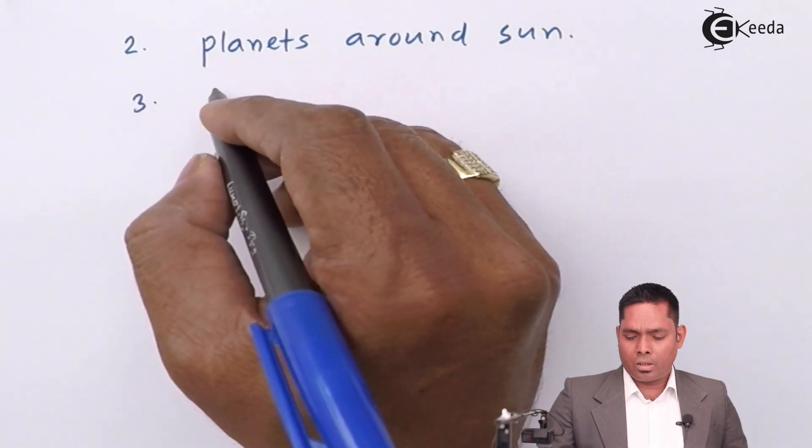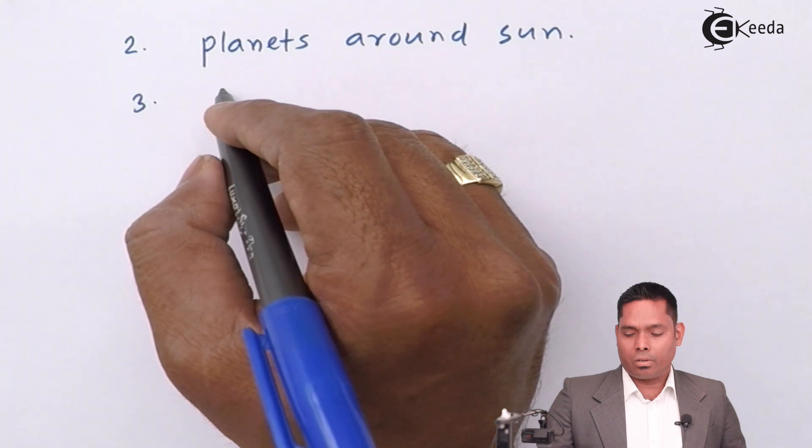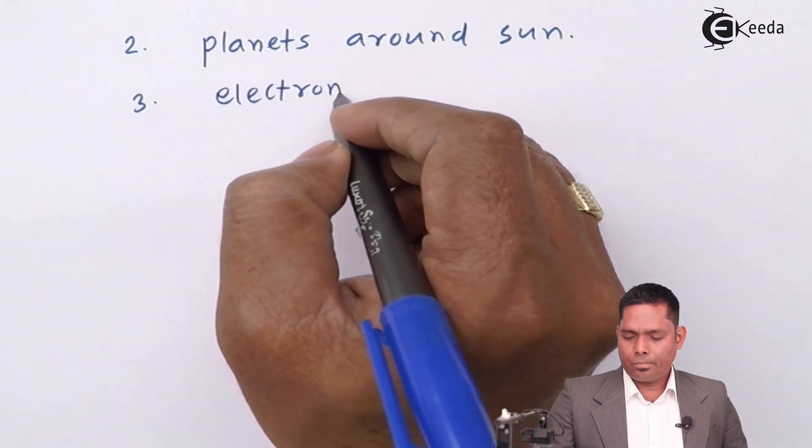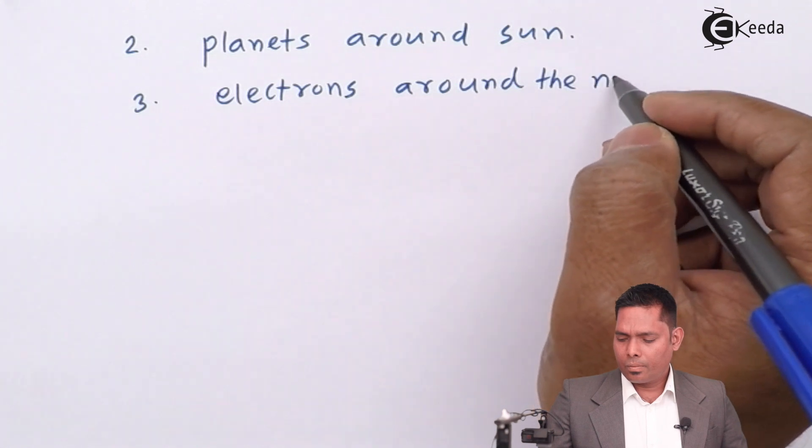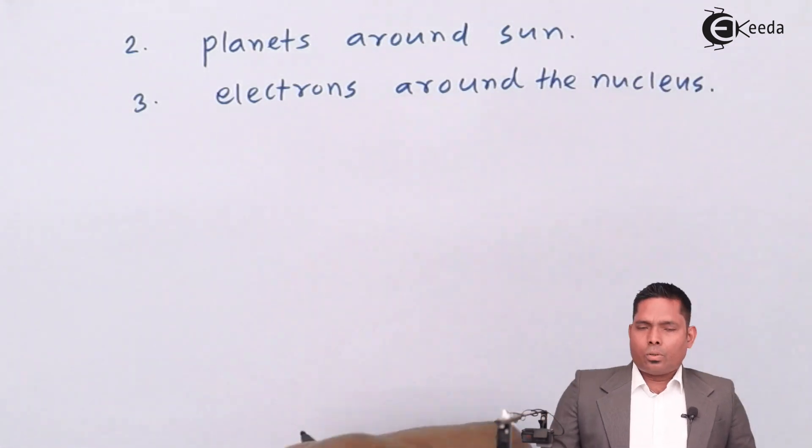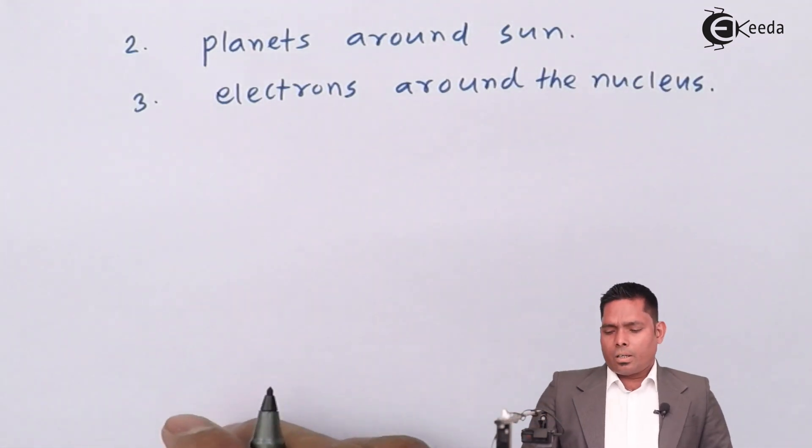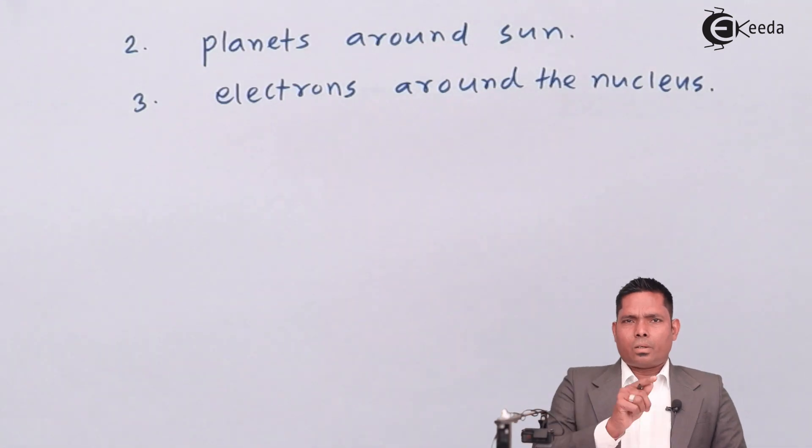Similarly, we have got electrons around the nucleus. So, inside the atom, the electrons are moving in a circular path around the nucleus.